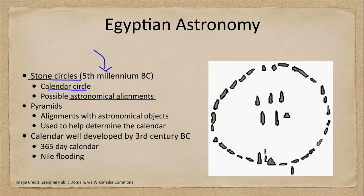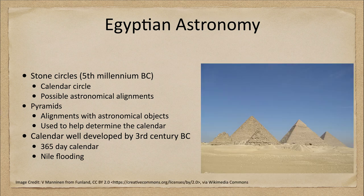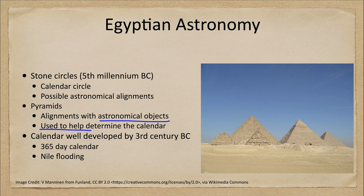Of course, prominently known for Egypt are the pyramids. Here's an image of some of those pyramids — they do show some alignments with various astronomical objects and were likely used to help determine the calendar. While they were also burial places for some of the pharaohs, they could also be used for calendars because they were very closely aligned with many astronomical objects.